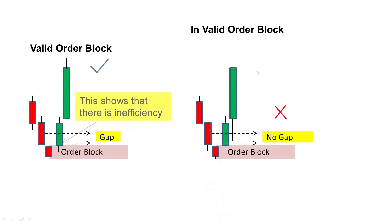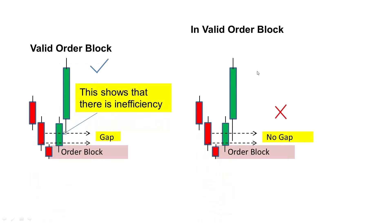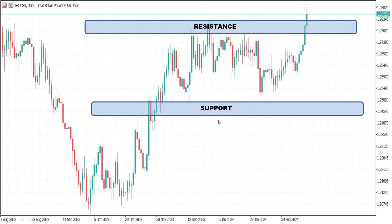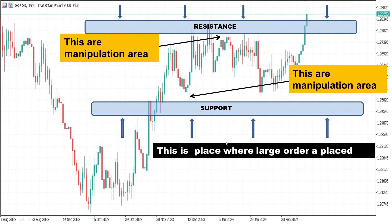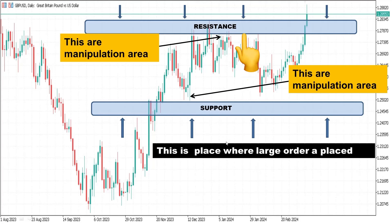Inefficiency indicates the lack of buyers or sellers in the market, leaving an equilibrium that eventually needs to be filled. Liquidity means money or a large counter order that must be fulfilled to spur the movement of the market institution. Liquidity is the fuel of the market. It is mostly found in the resistance and support of the market.